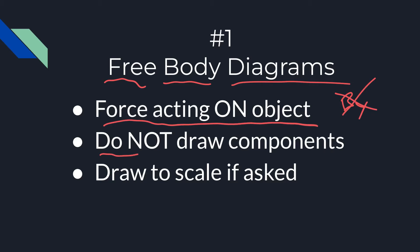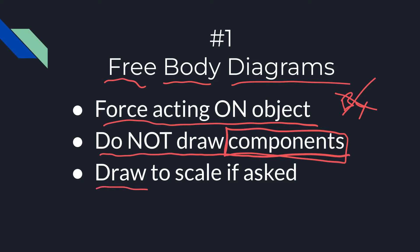When they ask for the free body, you don't draw the components. You're going to want to figure out the components eventually, but in general just draw the pure forces acting in the directions. You should also know how to draw to scale — the length of the arrow tells you the strength of the force. A short arrow represents a small force, and a long arrow represents a large force.